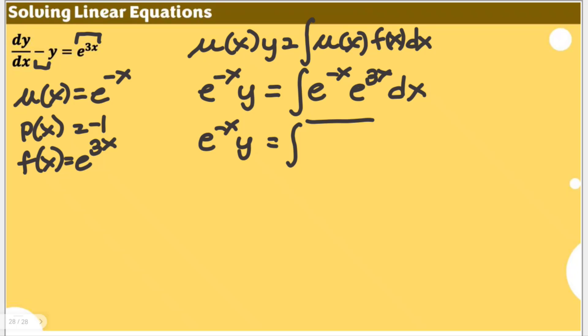We know that this is actually e to the power of positive 2x. That's e to the power of positive 2x, then dx.